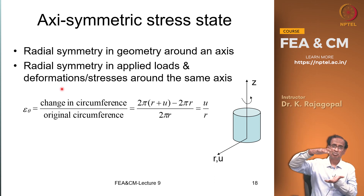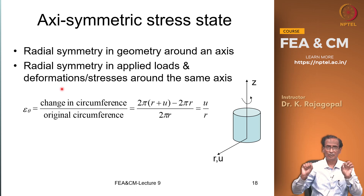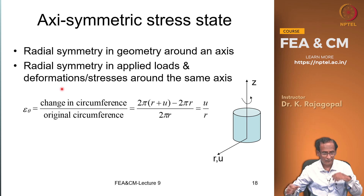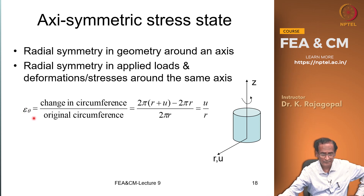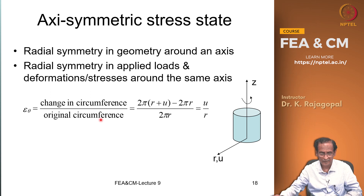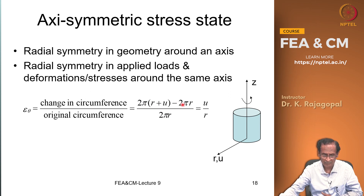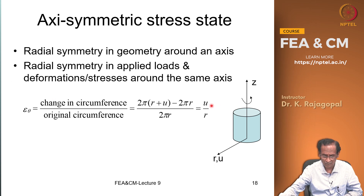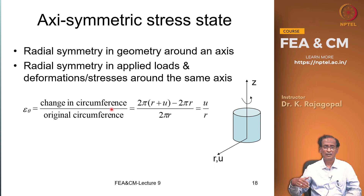In axisymmetric analysis, we have one additional strain called the circumferential strain or hoop strain. Imagine a cylinder — as you compress it, the diameter increases and the circumference increases. We define circumferential strain ε_θ as the change in circumference divided by the original circumference. If r is the radius and u is the radial deformation, the change in circumference is 2π(r+u) − 2πr, and the original circumference is 2πr. So ε_θ = u/r, where u is the radial displacement at radius r.